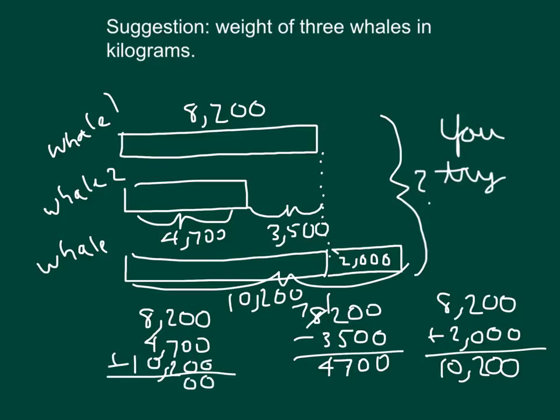0, 0, 2 plus 2 plus 7 is 11, regroup a 1. 8 plus 4 is 12, plus 1 is 13, regroup a 1, and 1 plus 1 is 2. So what we have there is 23,100 kilograms is the combined weight of all three whales.